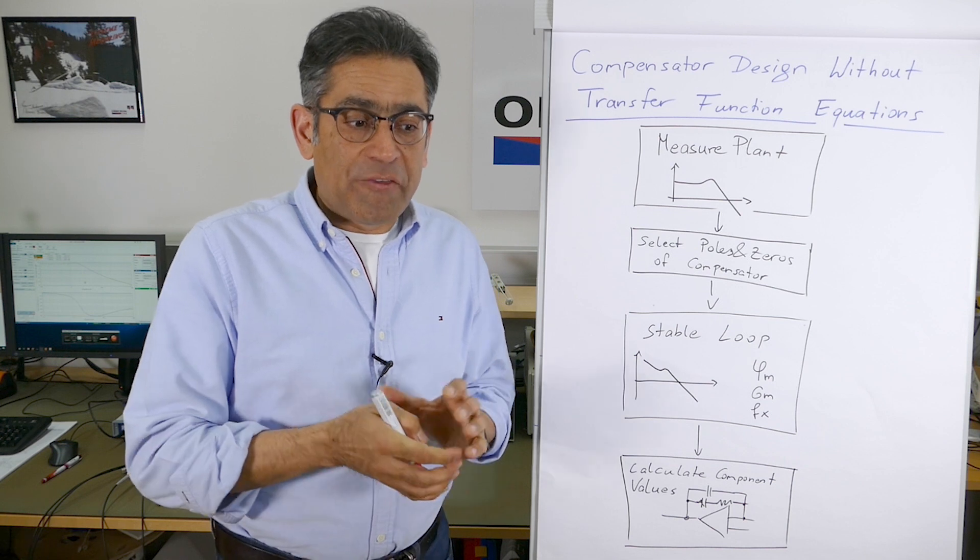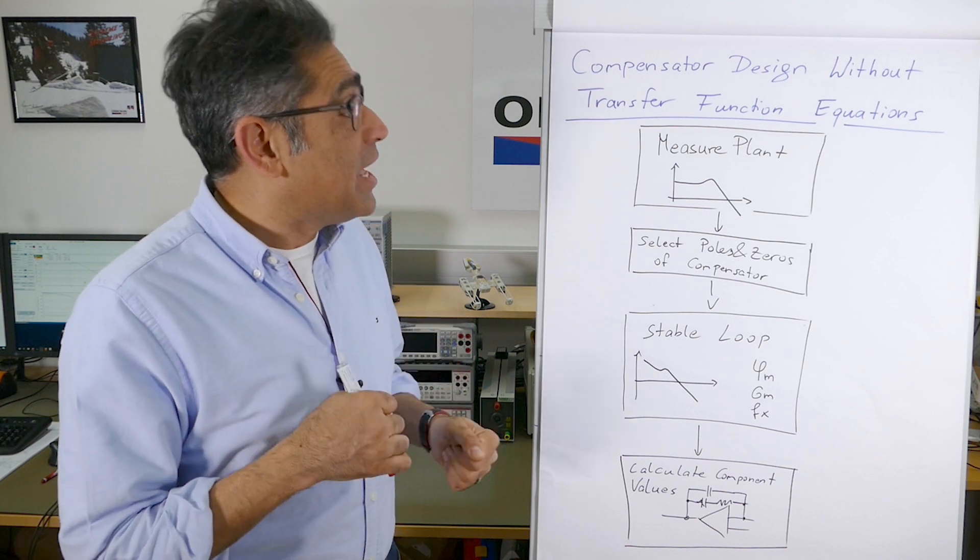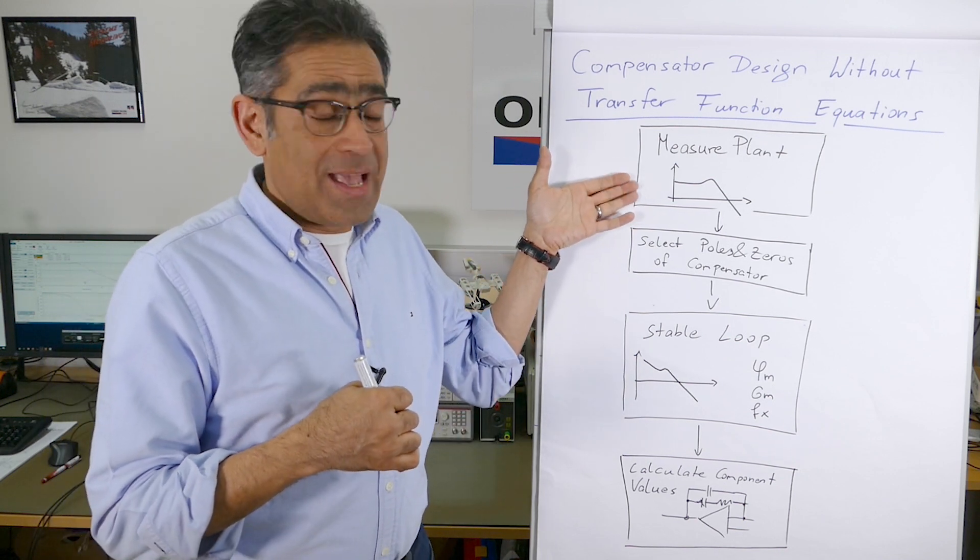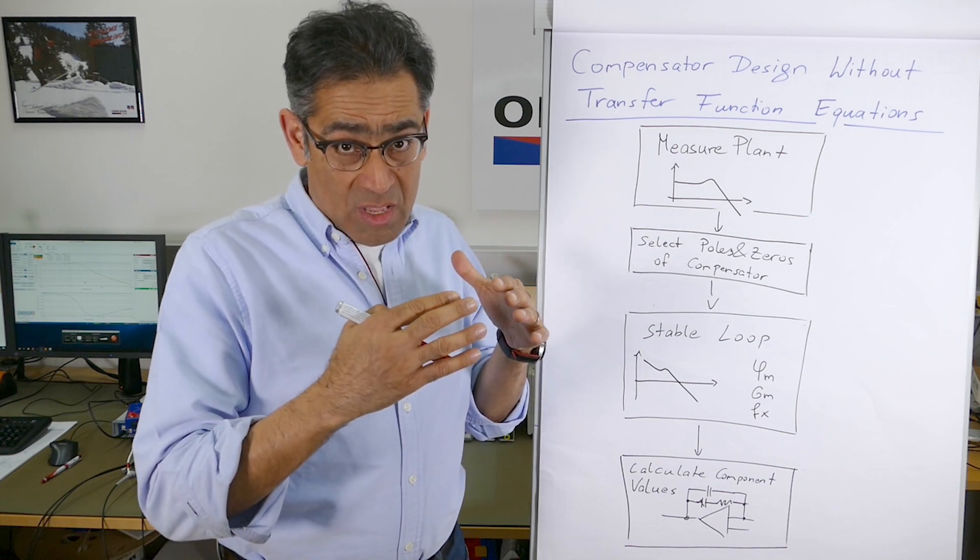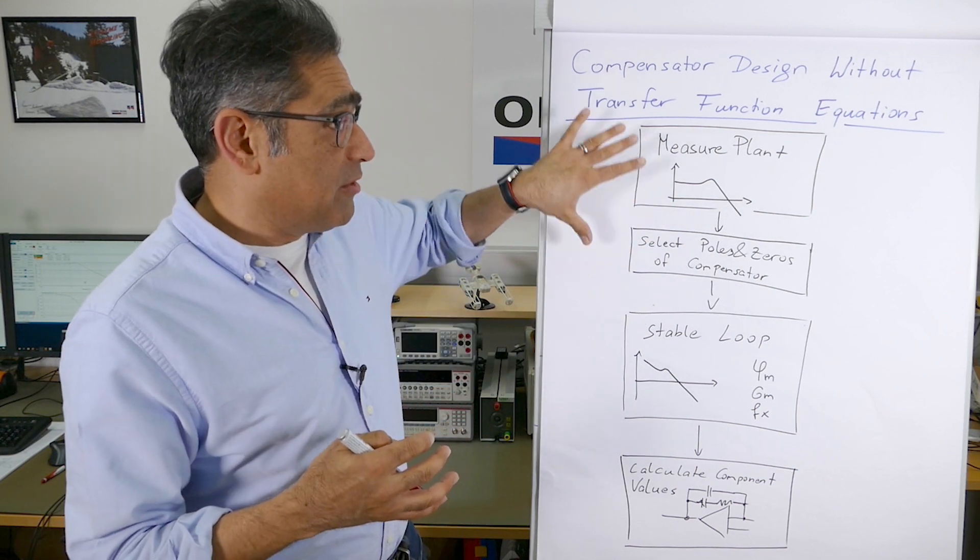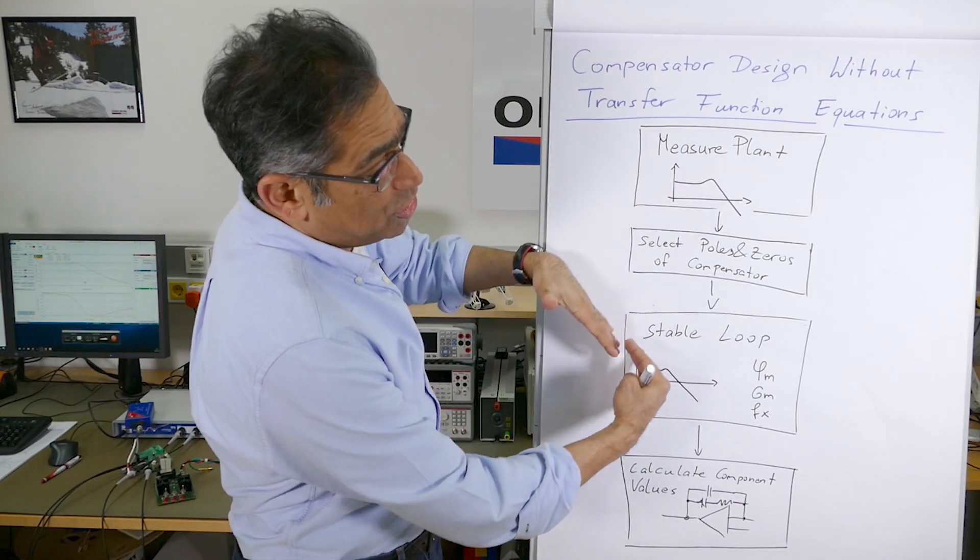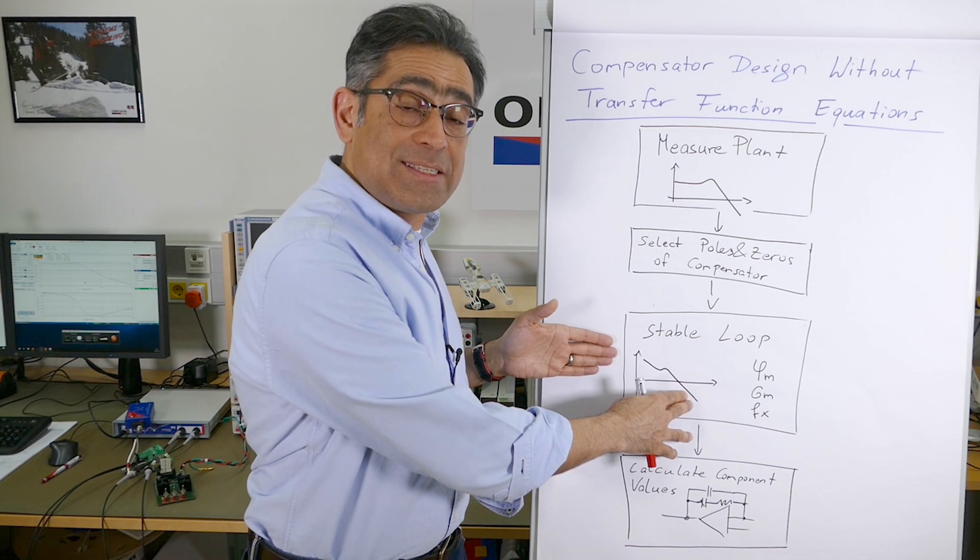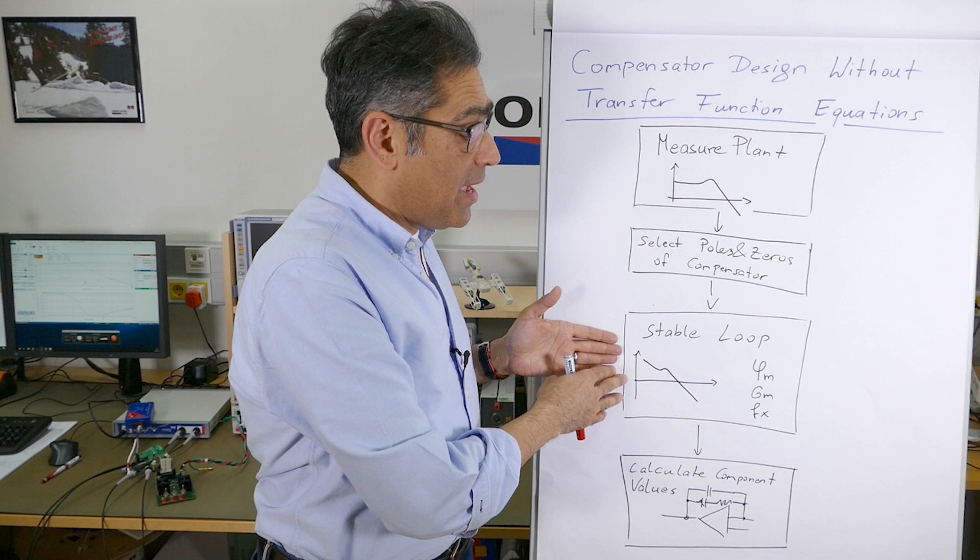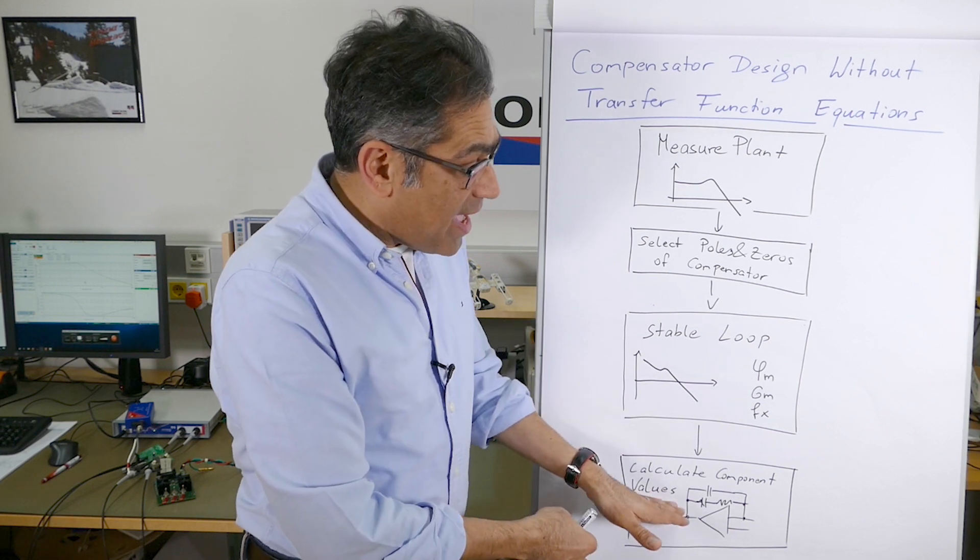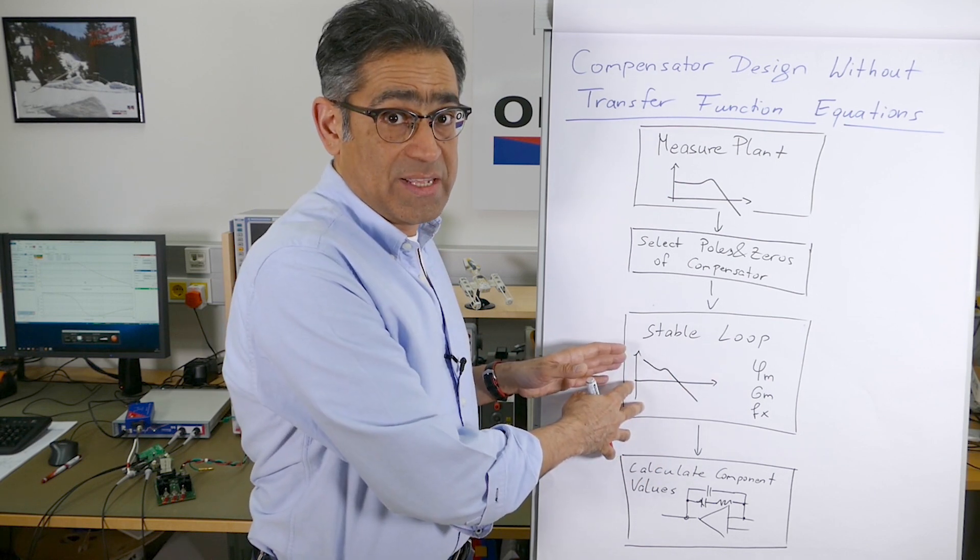We have introduced a new feature into WDS where you can actually measure the plant, and after you've measured the plant, you select the poles and zeros without any mathematics. We use Bode 100 to measure the plant and then manipulate it to shape it to get stability and meet the stability criteria. Then you create the compensator component values based on the poles and zeros that you've placed.